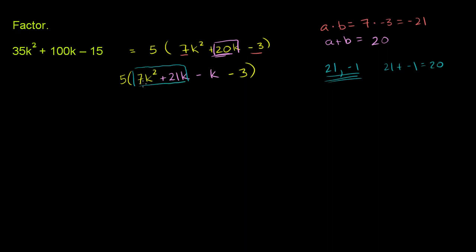Well, both of these are divisible by 7k. So we can write this as 7k times k plus 21k divided by 7k is just going to be a 3. So that factors into that.